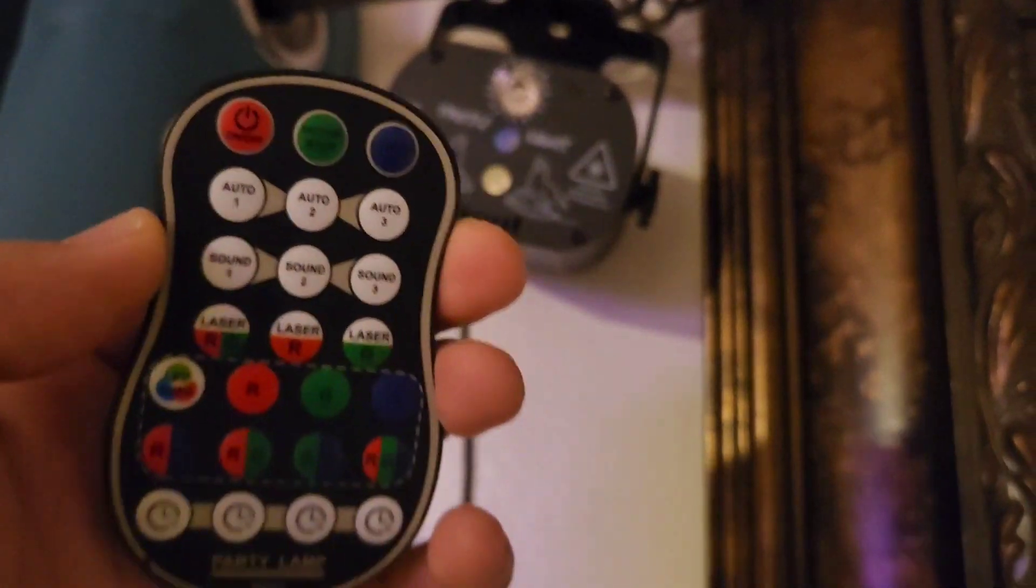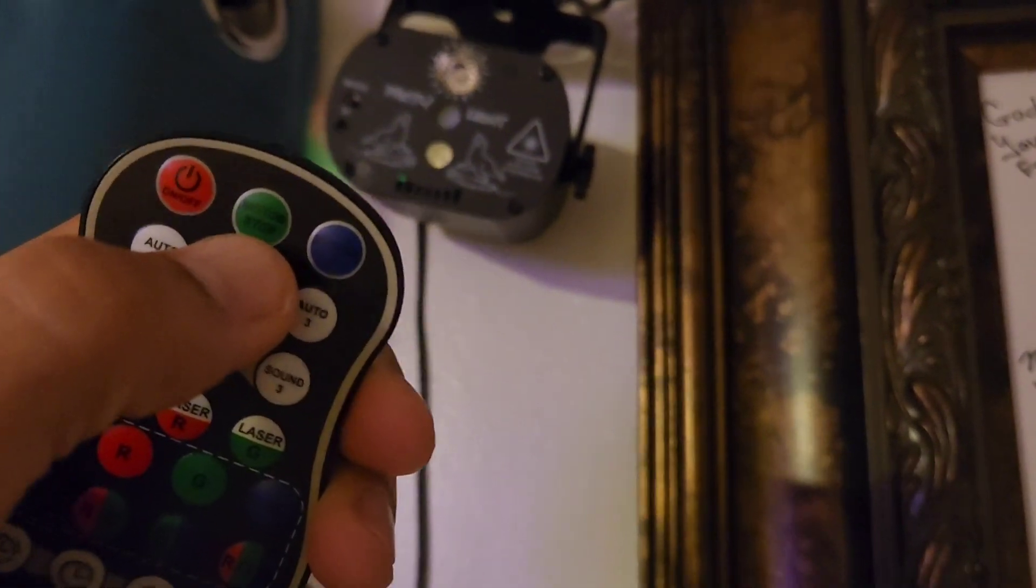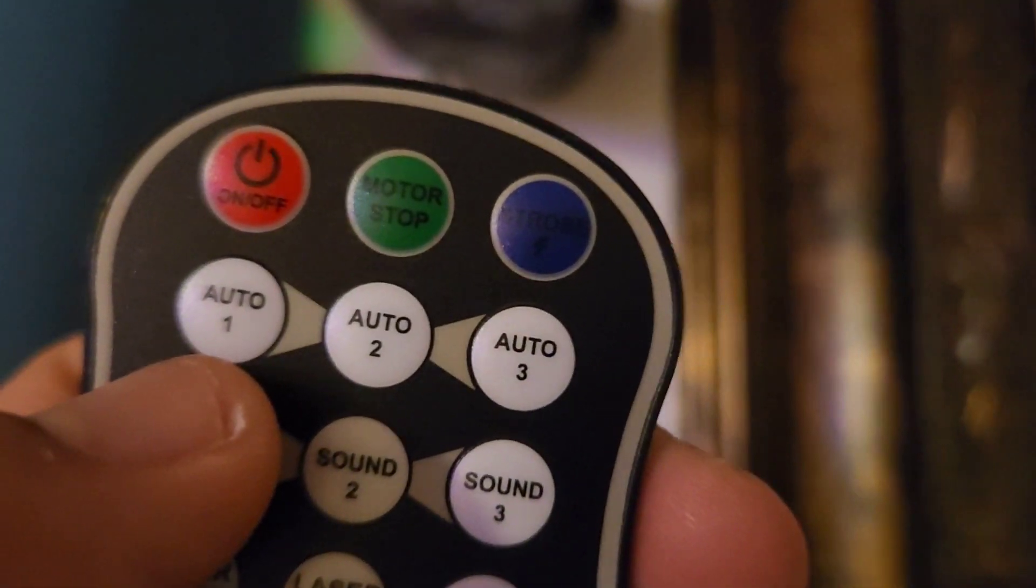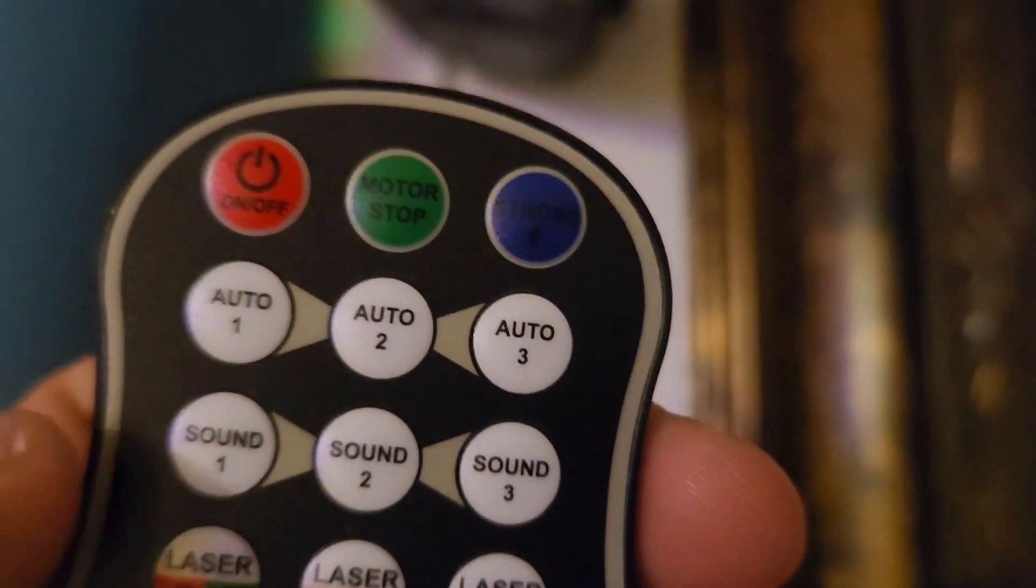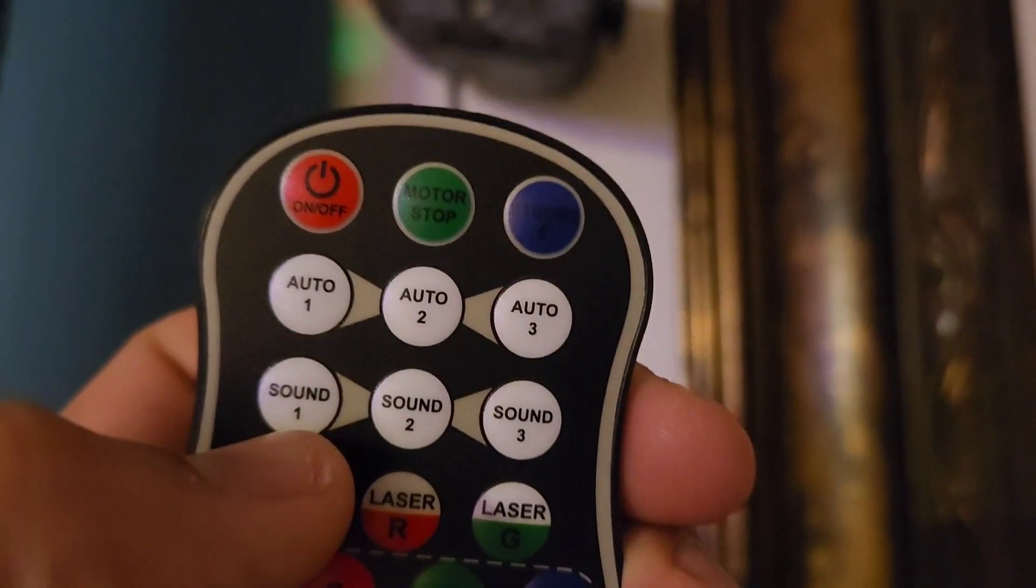It comes with this controller also. You have your power button, motion, stop, it has a strobe feature, and then it has three automatic settings for the party. You're even able to set it to motion with the sounds - three different motions.